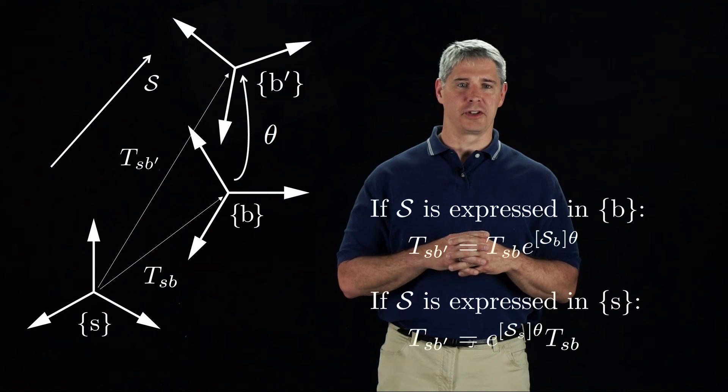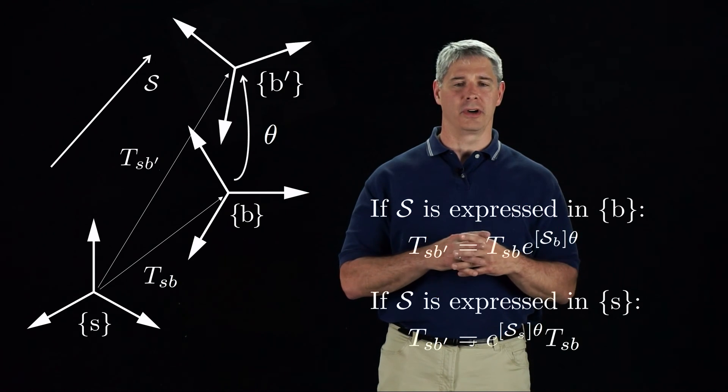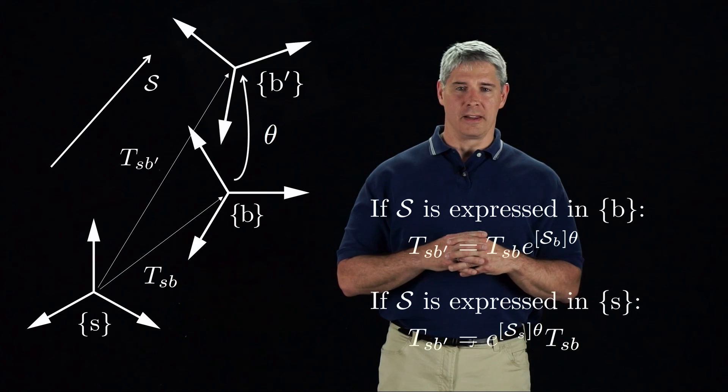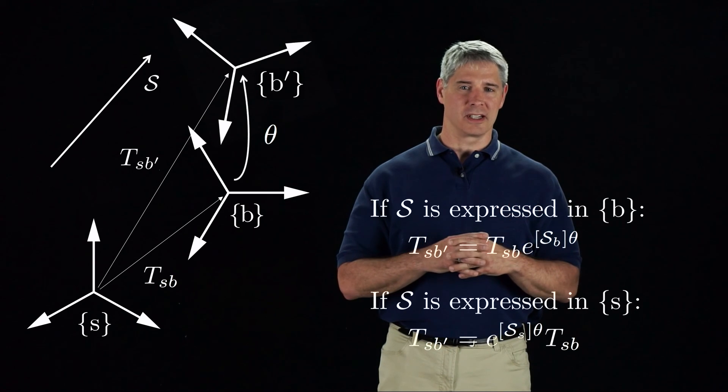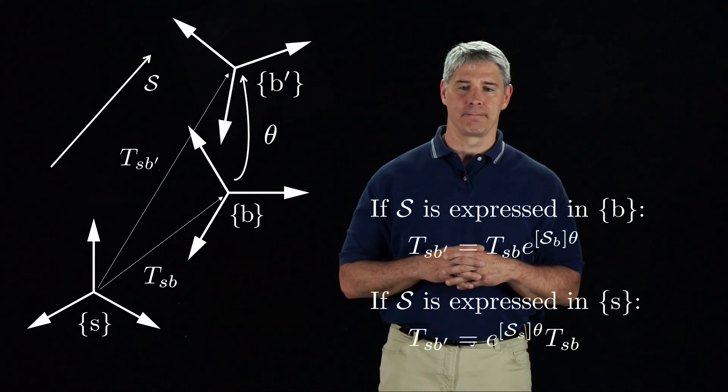Each single degree of freedom joint of a robot, such as a revolute joint, a prismatic joint, or a helical joint, has a joint axis defined by a screw axis. The matrix exponential and log will be used extensively in the study of robot kinematics starting in Chapter 4. The next and final video of Chapter 3 covers the representation of forces and torques in three-dimensional space.